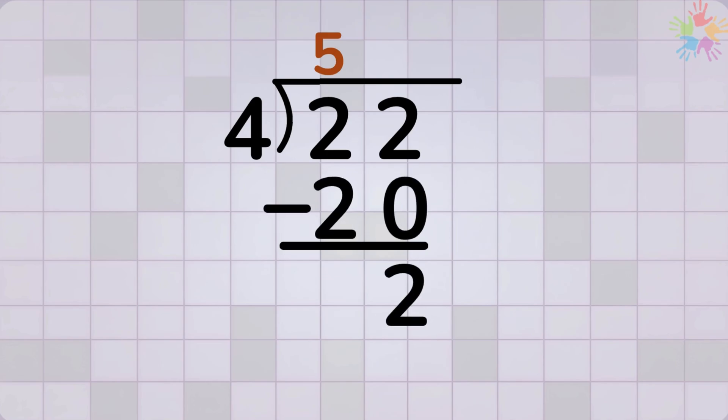There are no more digits to bring down. That left over 2 is our remainder. So the answer is 5 remainder 2. That means 4 goes into 22 five times, with 2 left over. Always check that your remainder is less than the number you are dividing by. That shows your answer is correct.